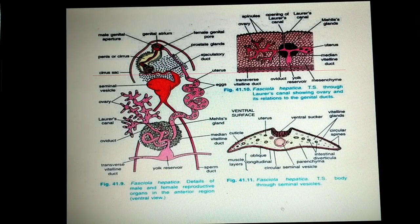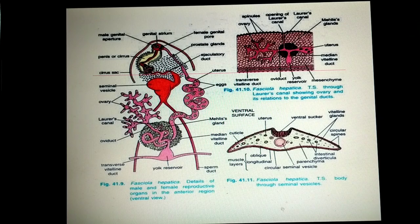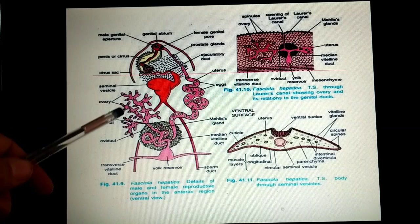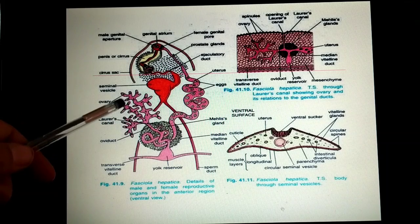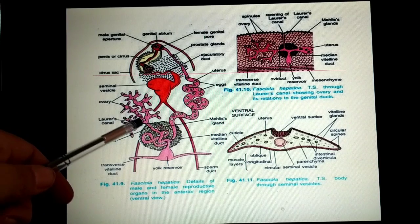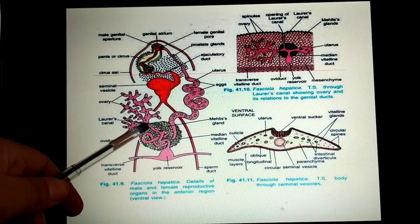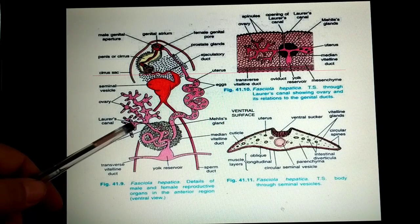Here you can see the structure. As I mentioned in the previous video, Fasciola hepatica is hermaphrodite — bisexual — meaning both sexes are present in the same organism. Here is the ovary, which is a single branched tubular structure that leads into the oviduct.